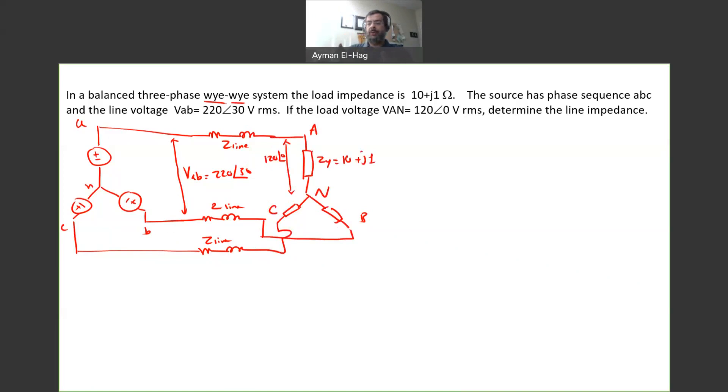As we mentioned before, what we need to do here before doing anything is isolate one phase. Now since the connection is Y-Y, we can always isolate the phase because there is a neutral at both sides. So I can actually isolate phase A from both the generation and the load.